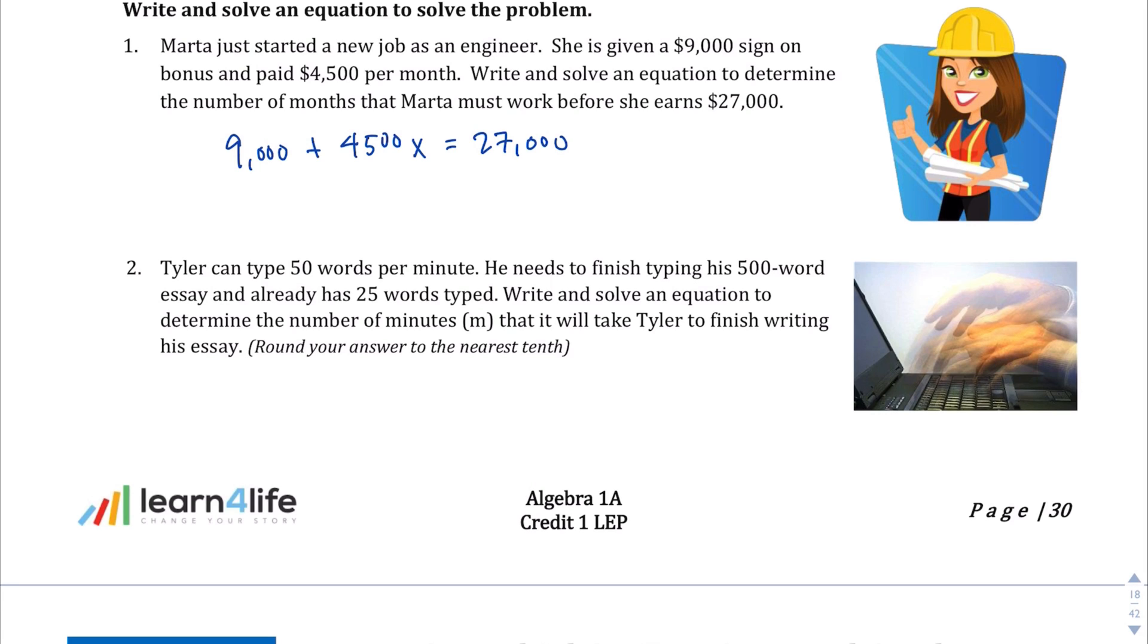And for us to figure out the number of months, let's go ahead and solve this. We need to first of all get rid of this guy here to get to X equals. That's our goal, the number of months, by the way. So I'm going to subtract 9,000 from both sides. If we do that, we get to 4,500X is equal to—what is that—18,000. And then once we do that, we divide both sides by 4,500. I'm going to punch that into the calculator real quick. We should get X equals 4. So Marta must work 4 months before she earns $27,000.